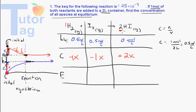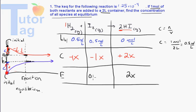At equilibrium, HI is going to be 0 + 2X, which simplifies to just 2X. H₂ will be 0.5 minus 1X, and I₂ will also be 0.5 minus 1X. Now all we have to do is find the concentrations at equilibrium, which means we need to find X.